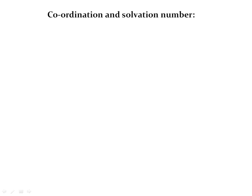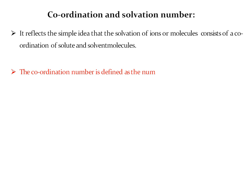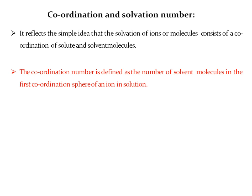Next is coordination and solvation number in the solvation process. This reflects the idea that solvation of an ion or molecule consists of coordination of solute and solvent molecules. The coordination number is defined as the number of solvent molecules in the first coordination sphere of an ion in solution. For example, if a single sodium ion is surrounded by three molecules of water, the coordination number of that complex is 3.